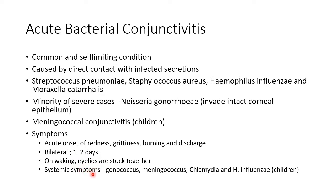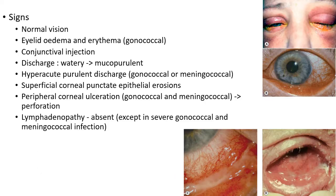There can be systemic symptoms in case of gonococcus, meningococcus, chlamydia, and Haemophilus influenzae, especially in children. Now let us discuss about the signs of acute bacterial conjunctivitis.